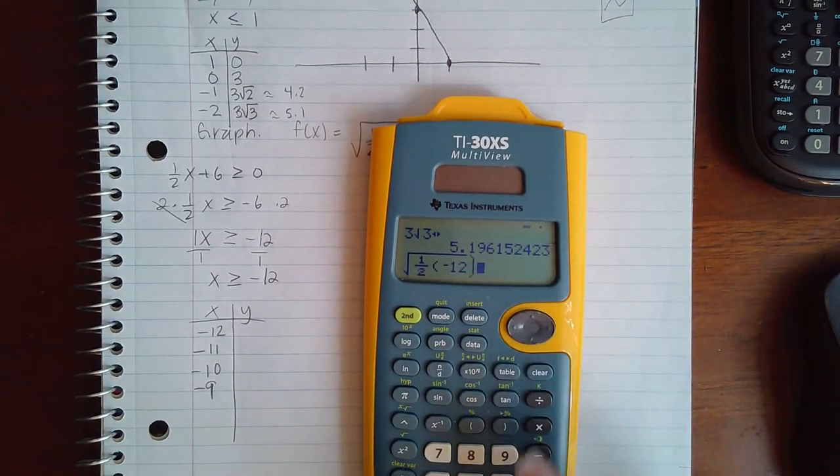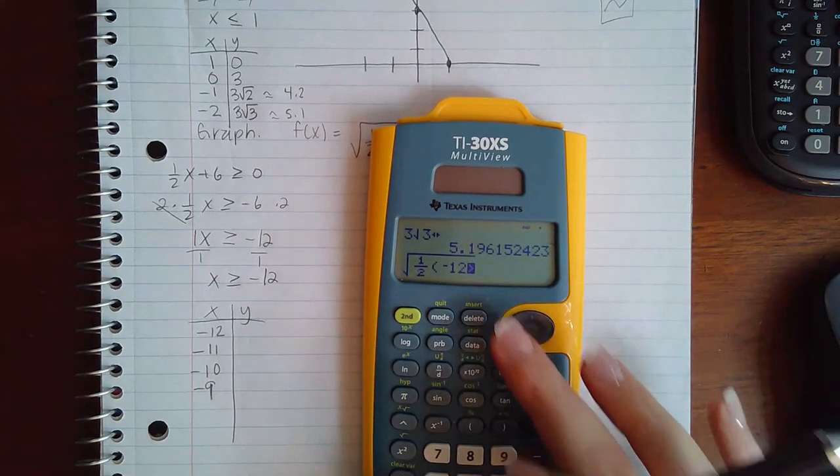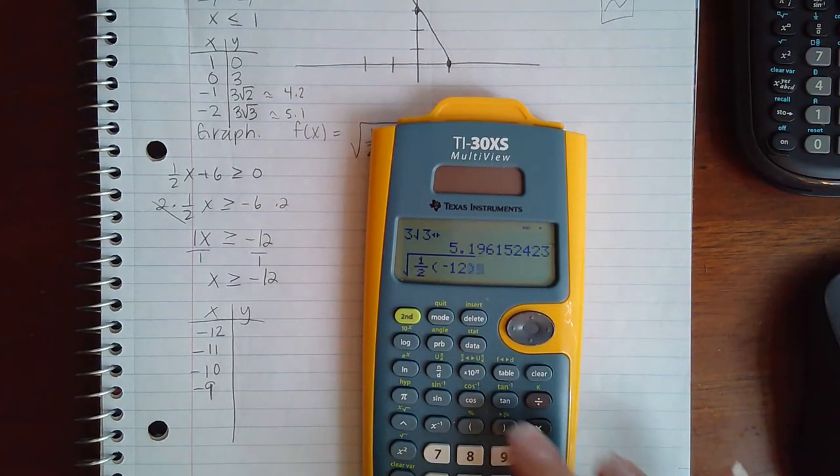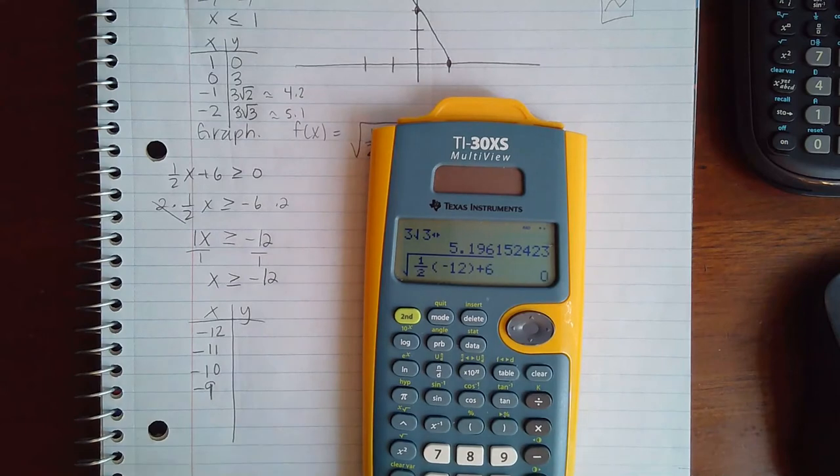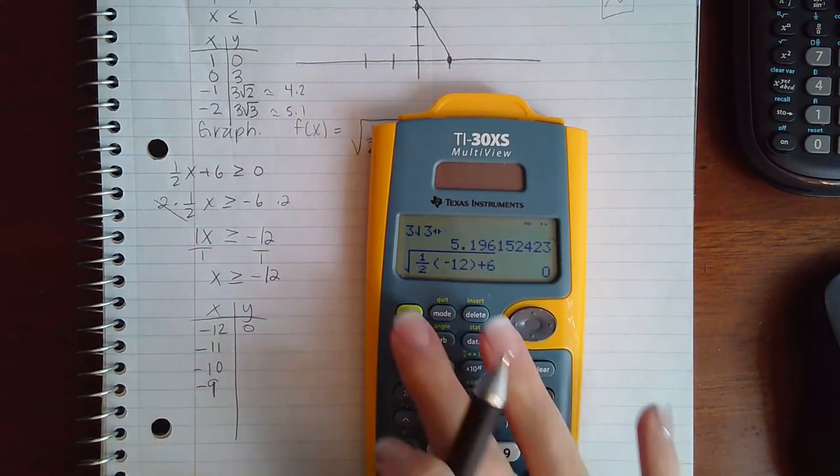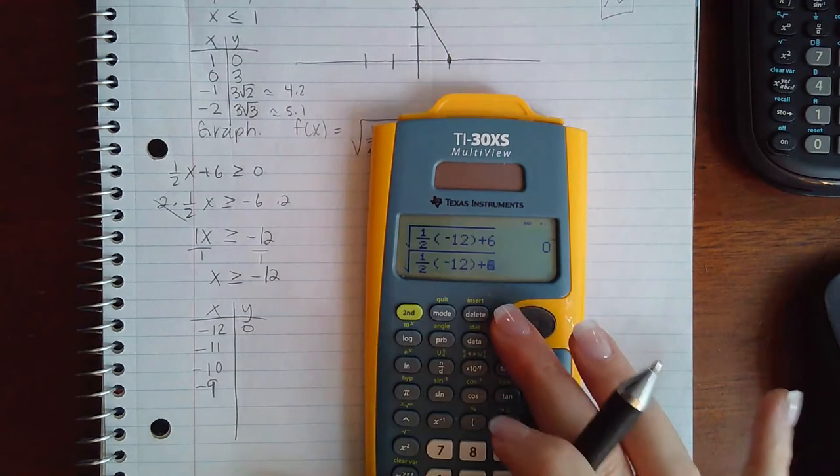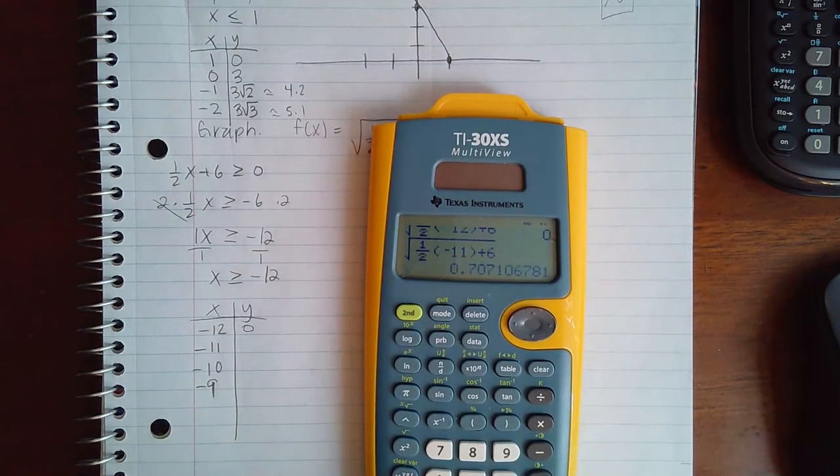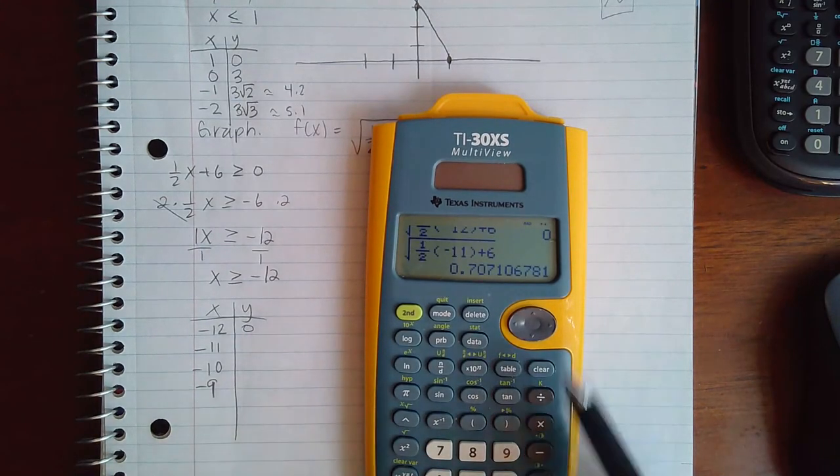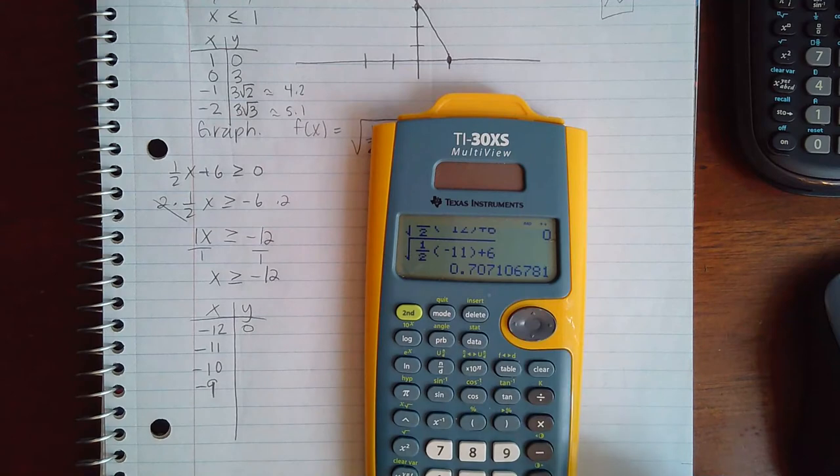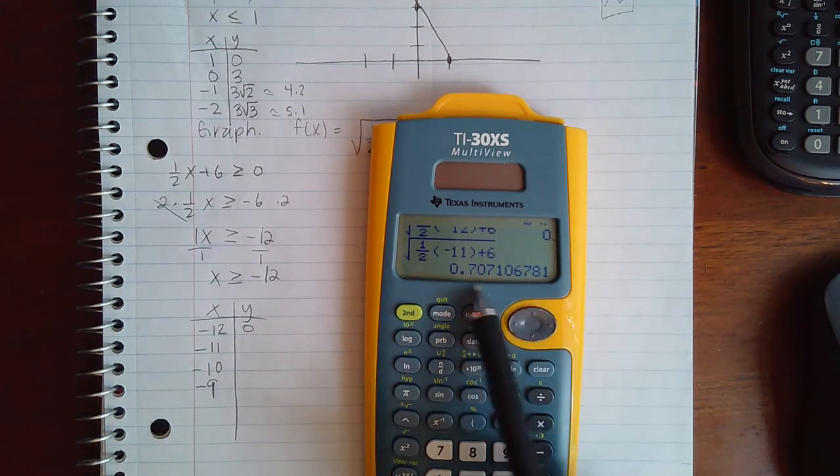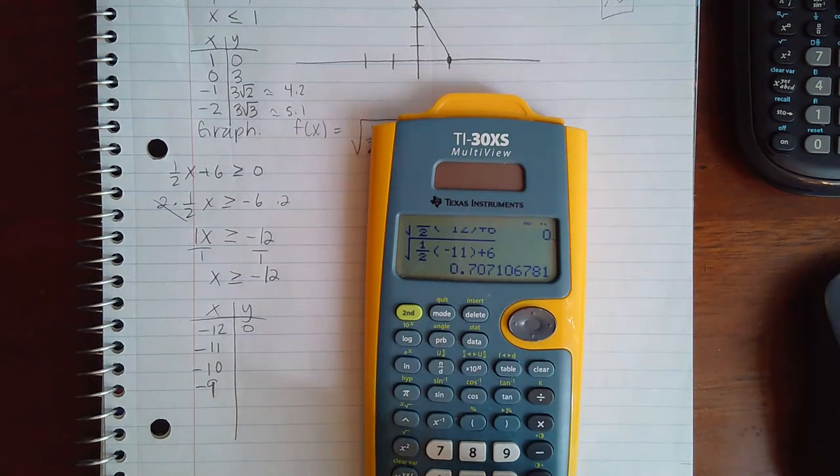So then if I plug these in there, let's see what happens. We get square root of 1 half times negative 12 plus 6, we get 0. Then I'm going to go back in there and I'm going to change that to now 11. This does not give me the exact answer and I will not be able to type that decimal on the computer and the computer give me the correct answer.